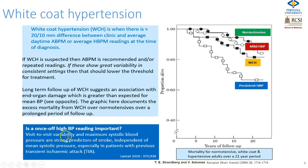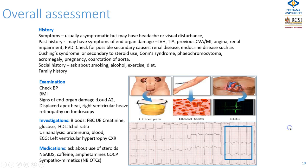Another aspect to consider is variability in blood pressure and also maximum systolic pressure, which are strong predictors of stroke independent of blood pressure, especially in patients with previous TIA.